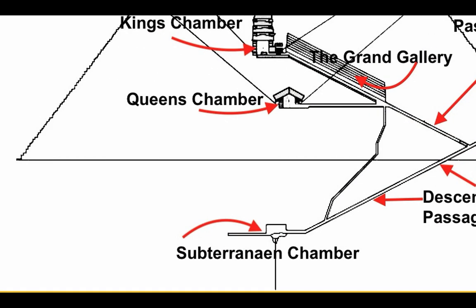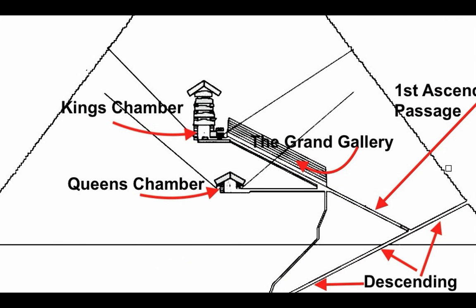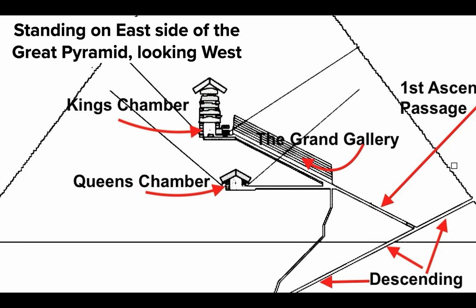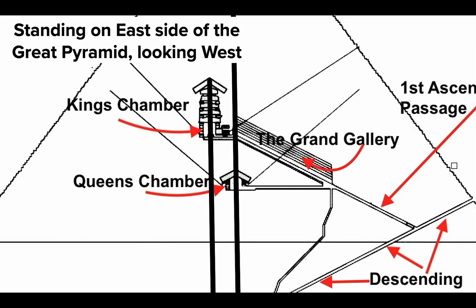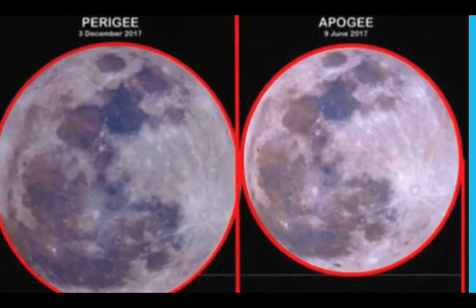If you go on the east side and look west, here's a cross section of the Great Pyramid chambers — the King's Chamber, Queen's Chamber, Grand Gallery. On the east side looking west, we see that the very center of the pyramid from this side goes right through the Queen's Chamber. And then offset to the south is the King's Chamber. Why the offset?